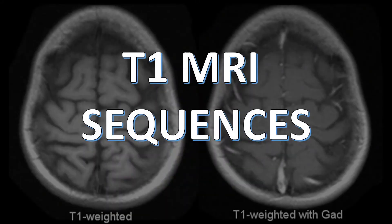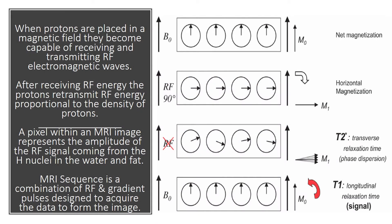T1 MRI sequences. When protons are placed in a magnetic field, they become capable of receiving and transmitting radio frequency electromagnetic waves. After receiving radio frequency energy, the protons retransmit radio frequency energy proportional to the density of protons. A pixel within an MRI image represents the amplitude of the radio frequency signal coming from the hydrogen nuclei — protons — in the water and fat.